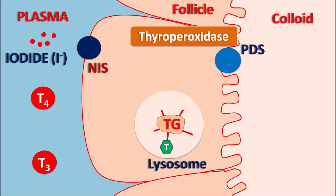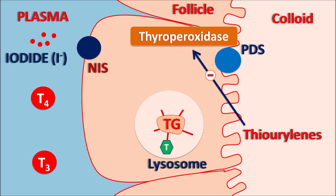Now let us see the action of thiourelians. Thiourelians can inhibit one crucial step — they inhibit the thyroperoxidase enzyme activity. By inhibition of this enzyme, they inhibit the iodination of tyrosine residues, which inhibits the biosynthesis of thyroid hormones. Additionally, in peripheral tissues, T4 can be converted to T3, and this conversion is blocked by propylthiouracil (PTU), which inhibits the peripheral conversion of T4 to T3.